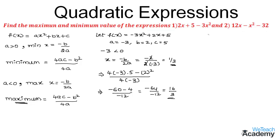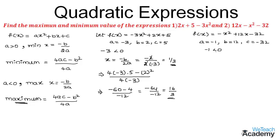Now let us move to the next expression. We consider the given expression as f(x), and by writing it in the standard form we get -x² + 12x - 32. In this expression we have the values of a as -1, b as 12, and c as -32. We observe that the coefficient of x², which is -1, is less than 0.